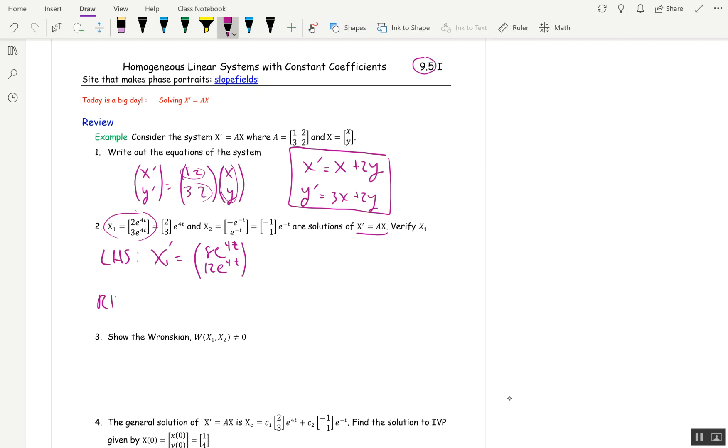The right-hand side is AX, and we're testing X₁, so AX₁. A is [1,2; 3,2], and X₁ is (2e^(4t), 3e^(4t)).